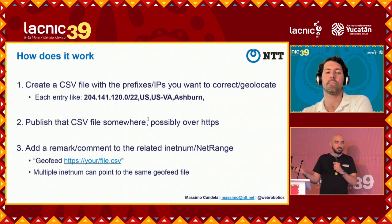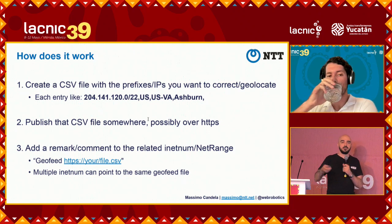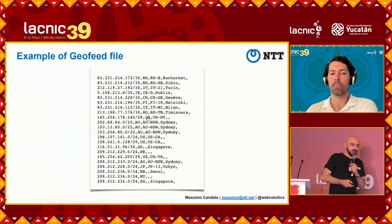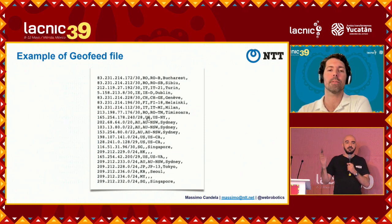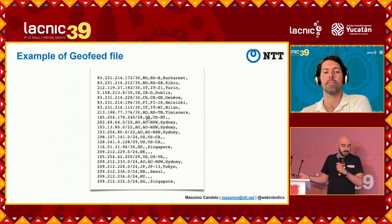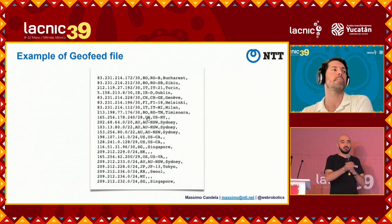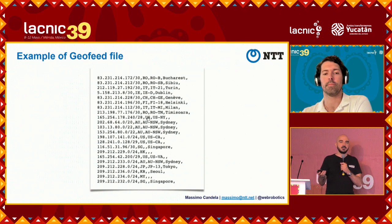Once you put the link to your file, that's all you need to do. Geolocation providers will automatically fetch it and use it. In the geofeed file, you can put as many prefixes or IPs as you want in the same file. You can specify country code or any level up to city. If you put the prefix followed by all empty fields — comma comma comma comma — it means 'do not geolocate.' But be aware that geolocation providers are not necessarily going to respect your wishes.